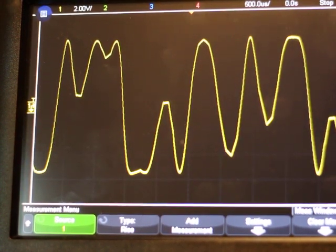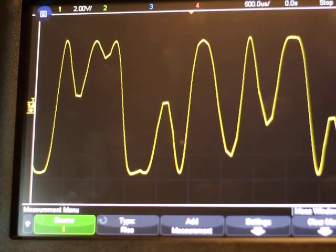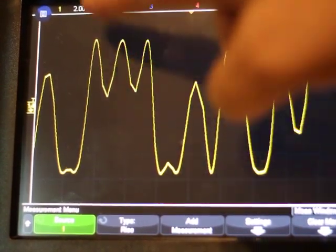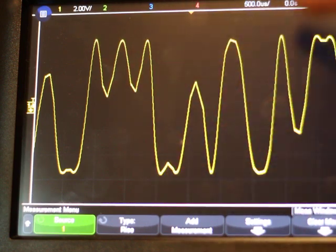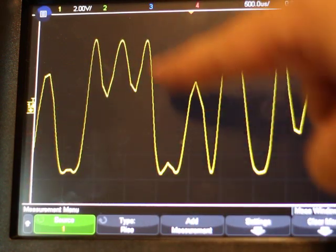And then this is full modulation depth right here. Again, this is the medium setting. We have light, medium, and far settings. And here you can see that the wrap around frequencies are the dominant, and you can hardly tell that there's a 440 Hertz original signal here.